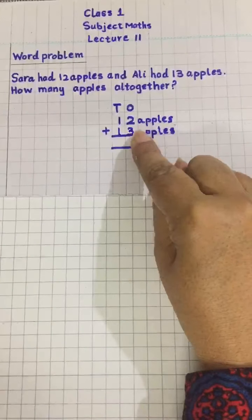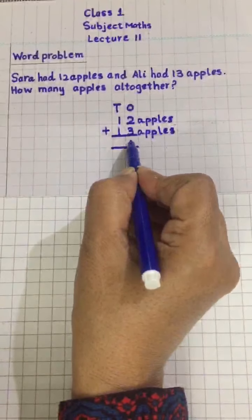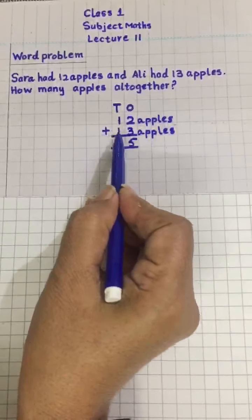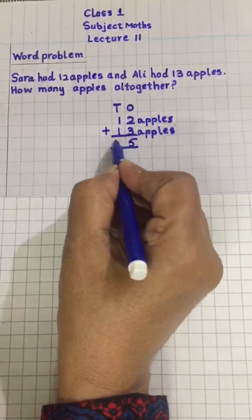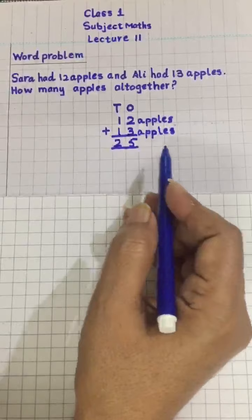2 plus 3 equals 5. 1 plus 1 equals 2. 25 apples all together.